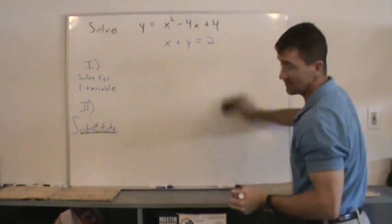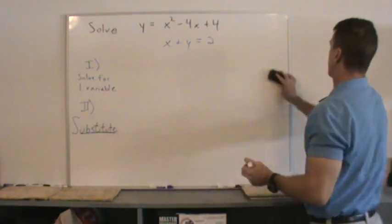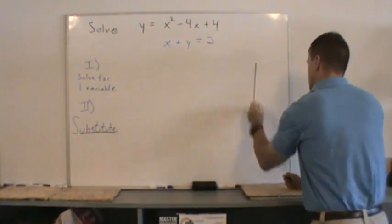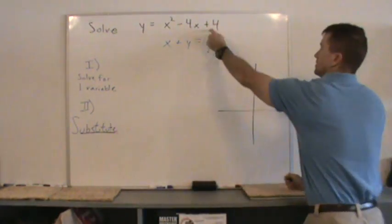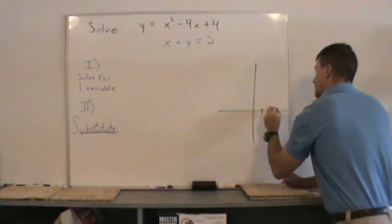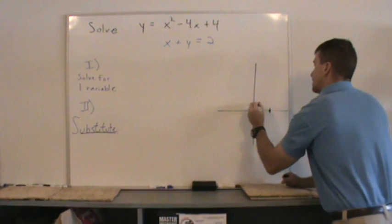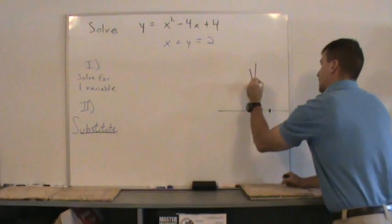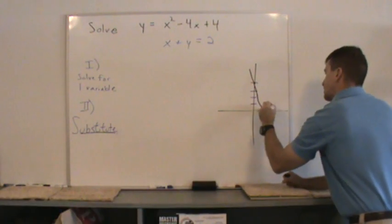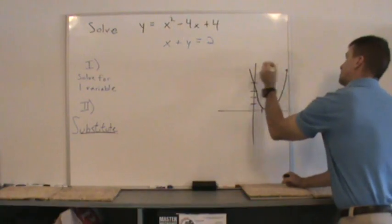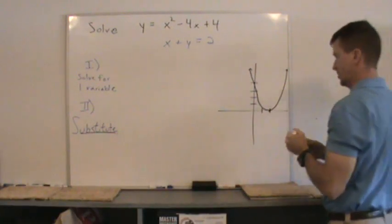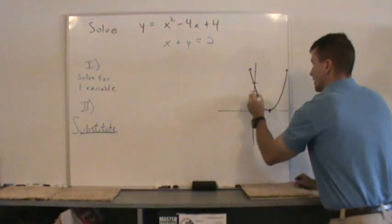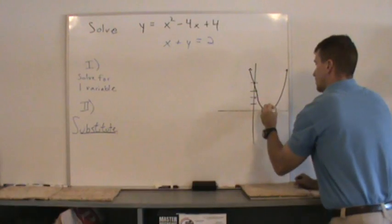Now, you don't have to graph this, although it's not a bad idea to get an idea of what's going on so you know how many solutions you could expect. So this is a parabola. I noticed the vertex is right here. I just wanted to make a picture here. There's the parabola. And then we're going to have a straight line here. Y equals negative x plus 2. That thing's just going through here like this.